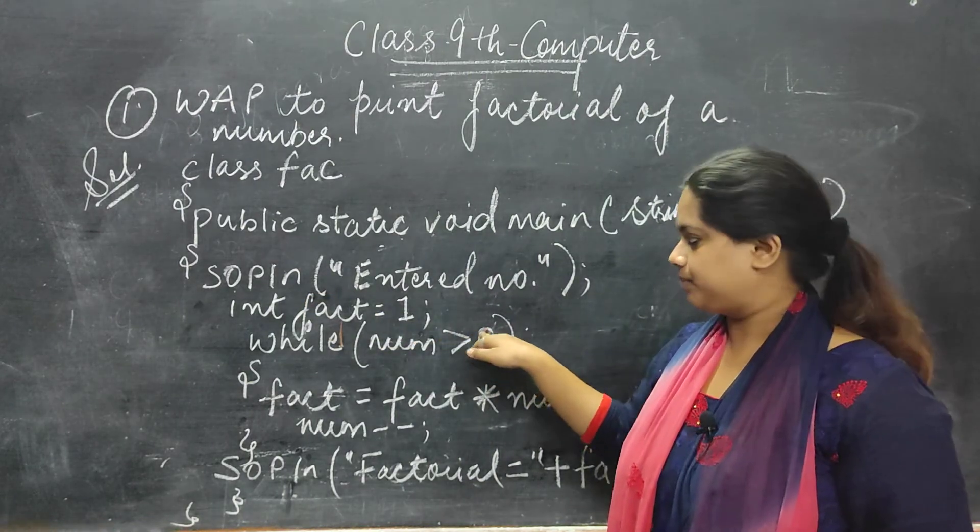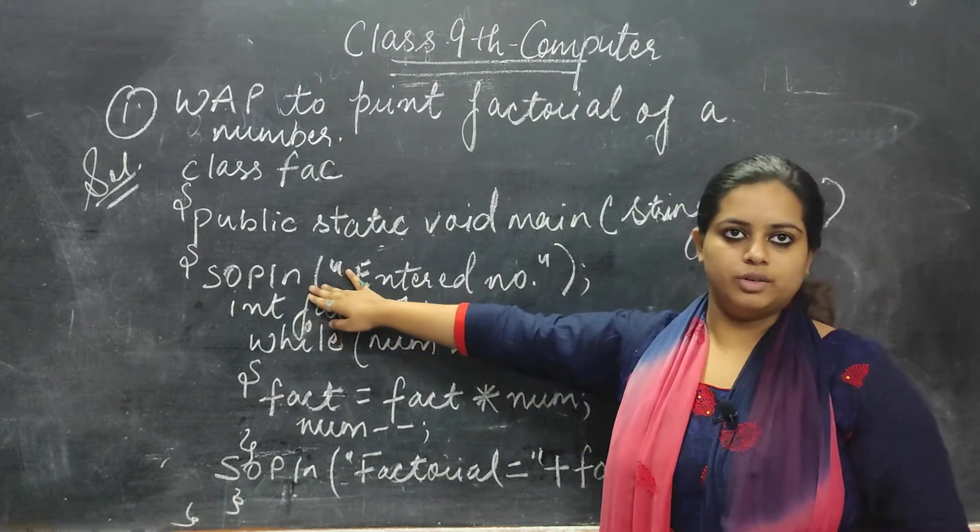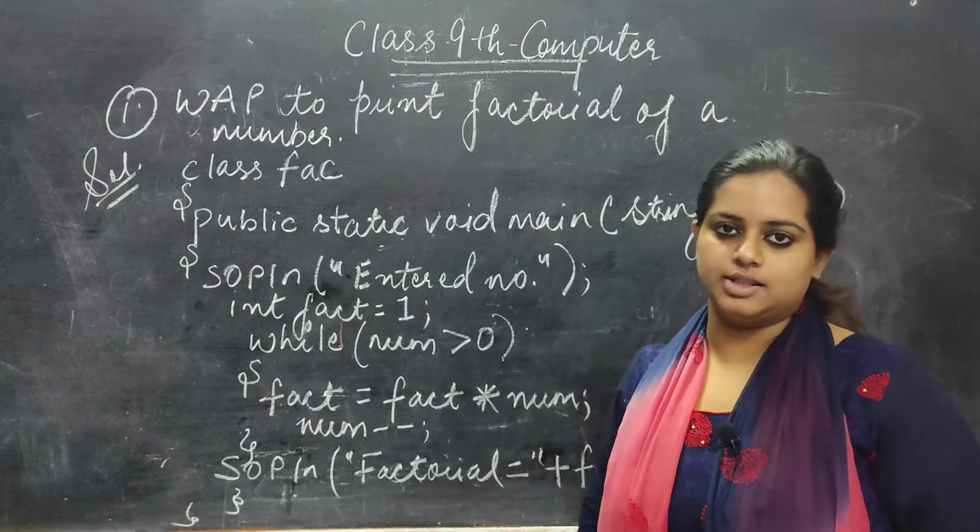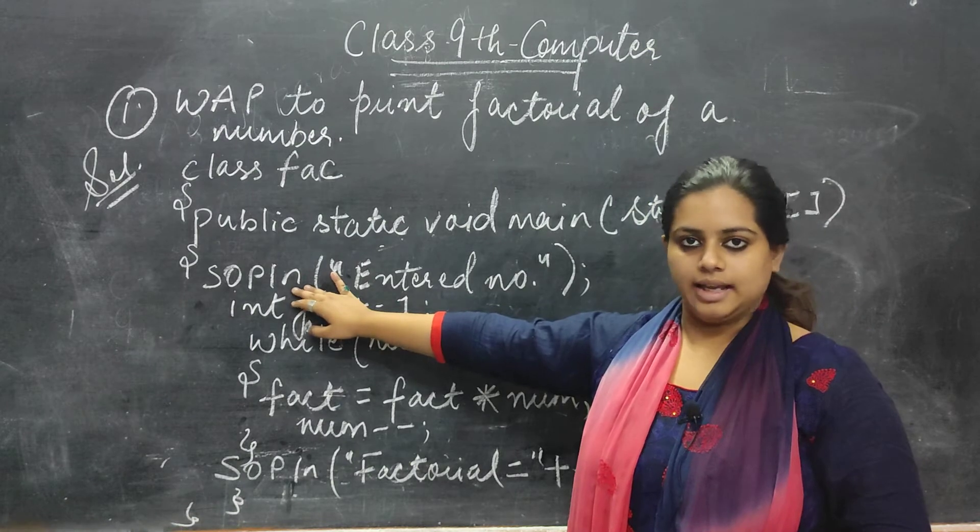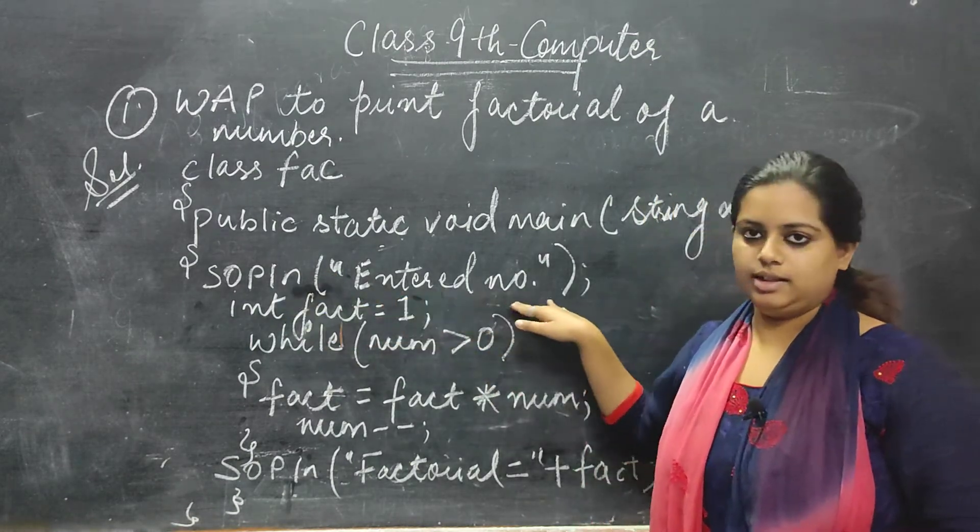Then I have taken the print statement over here, we have entered a number. I have not written the full form over here, but it is already assumed by you. This means system.out.println and enter a number.